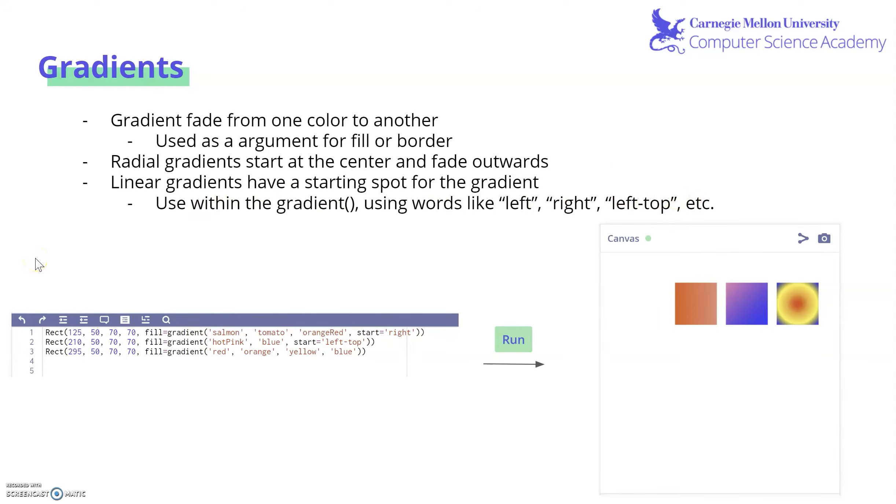Let's take a look at this example. We have our first rectangle all the way to the left on the canvas. We do fill equals gradient, open parentheses, then the colors in order that you want to see fade with a starting point at the right. All the way to the right, we have salmon going into tomato, going into orange red. Here's another linear gradient: fill equals gradient, hot pink to blue, starting at the left top. And here you can see the hot pink going all the way to the blue. Finally, we have a radial gradient at number three with red, orange, yellow, blue. No start specified because radial is the default. Here it is, red to yellow to blue.